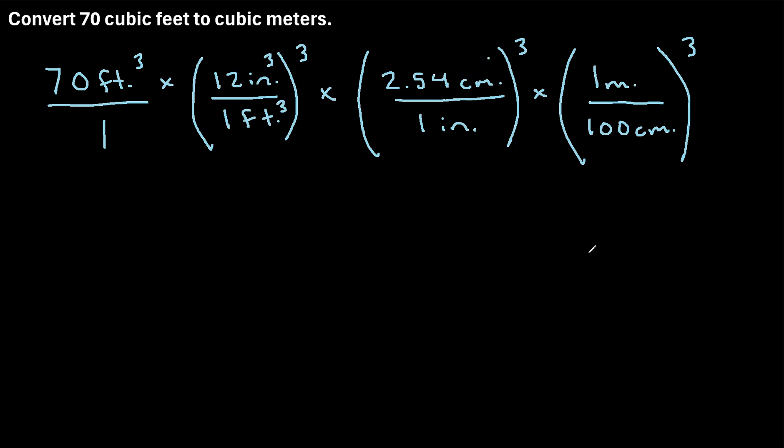This would be 2.54 centimeters cubed. This would be 1 inch cubed. And then we have 1 meter cubed and 100 centimeters cubed. Now when we multiply all these values out,